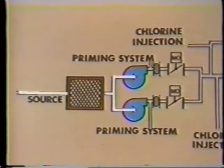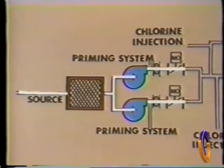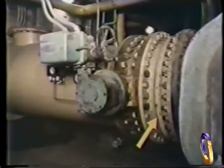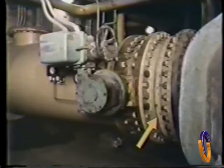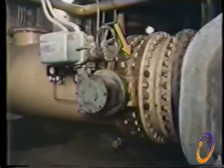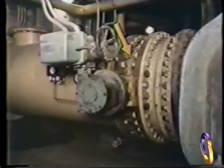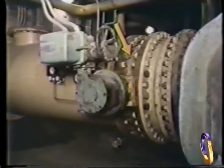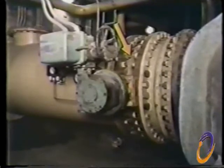Returning to our circulating water system drawing, we see that the circulating water flows through the expansion joints and the discharge valves. Expansion joints allow for some piping movement, such as when the pumps are started and a lot of water is flowing through the system. The discharge valve is often a motor-operated butterfly valve. This valve is open while the pump is operating, but is closed when the pump is shut down. This prevents any backflow through the non-operating pump.